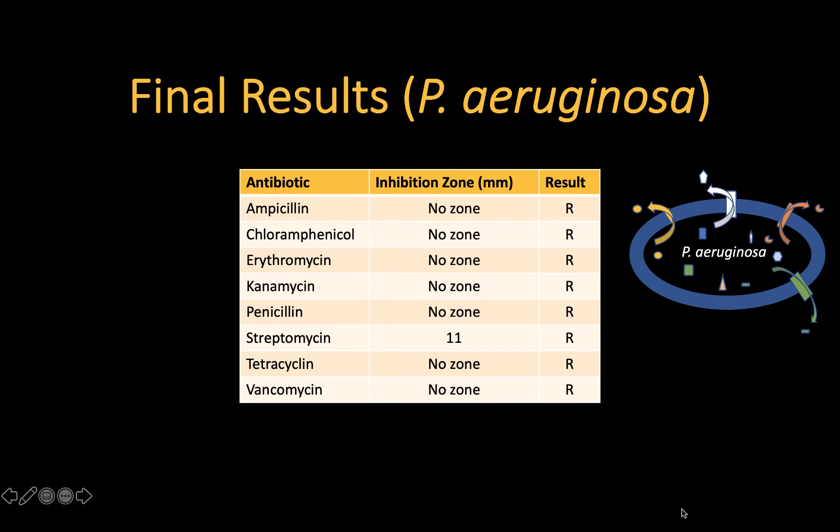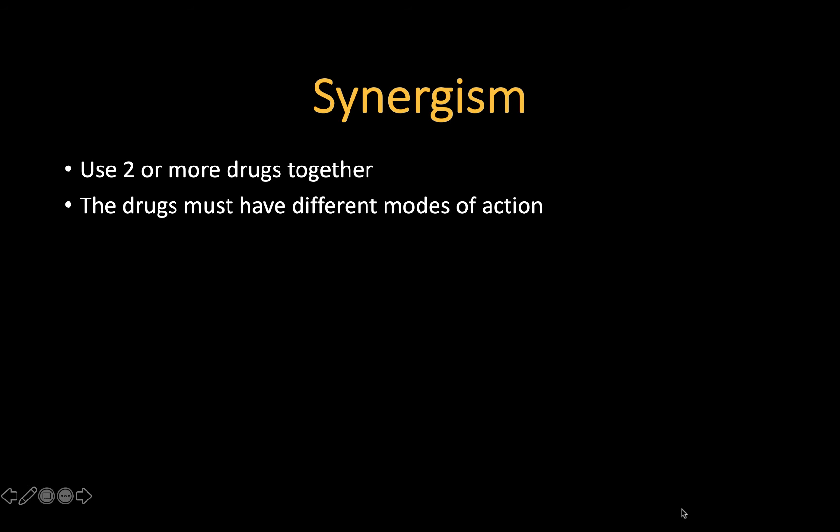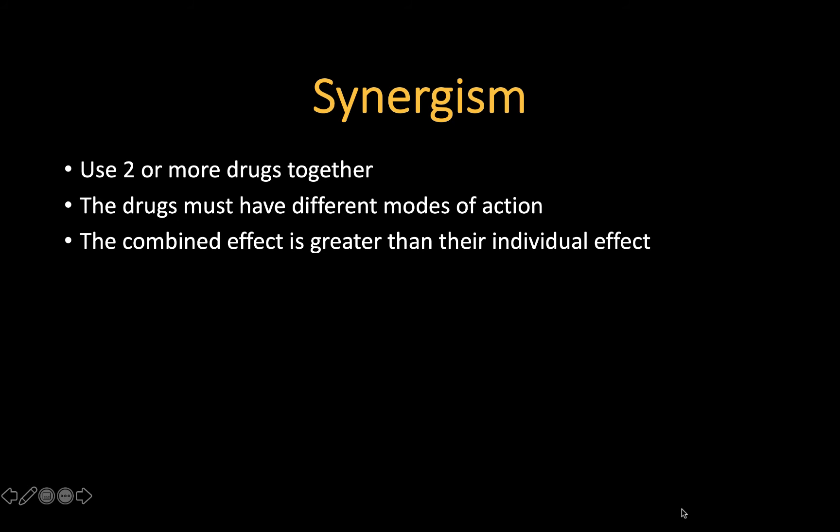Alternatively, it may be possible to achieve a synergistic effect. Synergism is an effect of using two or more drugs with different modes of action at the same time. For example, one drug might inhibit transcription and the other translation, or one inhibits a metabolic pathway and the other inhibits transcription. The idea is that the bacteria may be able to withstand the presence of drug A or drug B separately, but not at the same time, and the combined effect of the two drugs is greater than their individual effects.